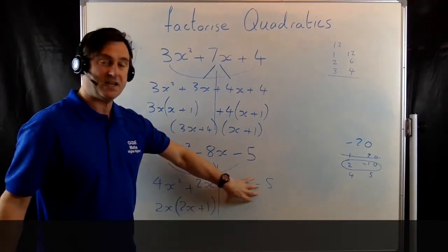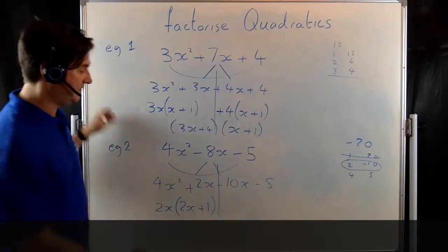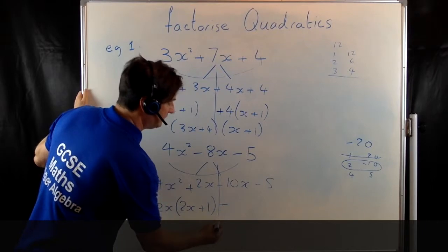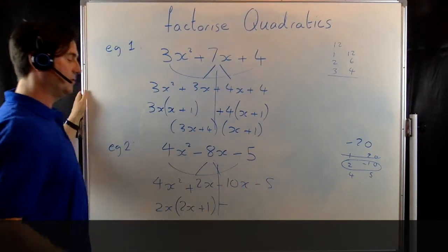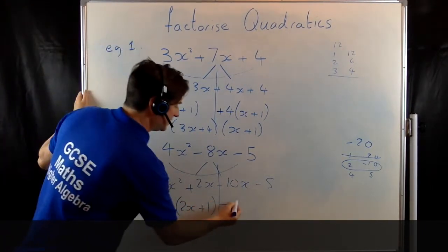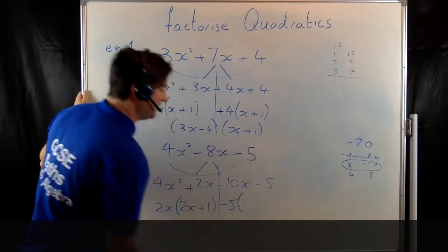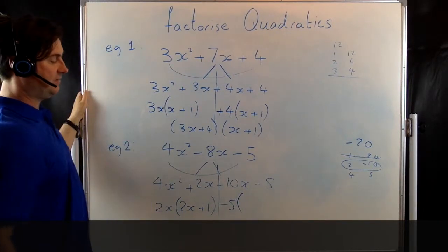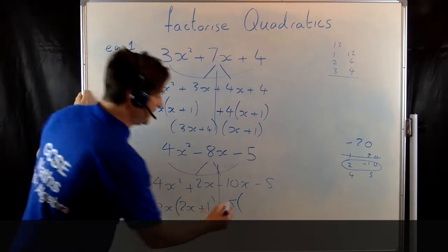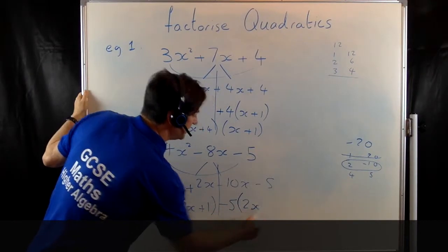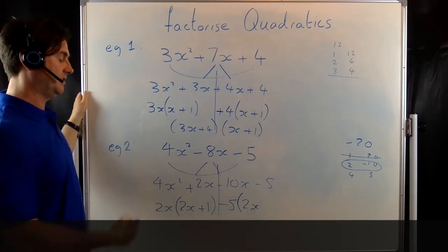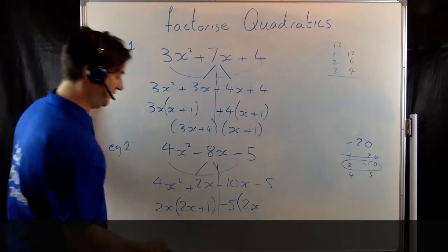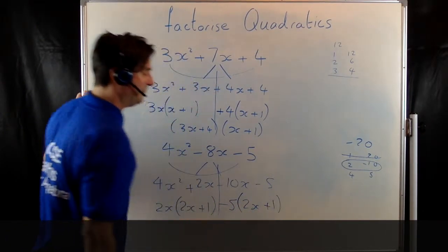Do the same with the second pair. There's a negative outside here so put a negative there. What occurs in both? What's a factor of both? It's 5. So I'll write negative 5. Open the brackets. Negative 5 times what gives us negative 10x? Well that's going to be 2x. And negative 5 times what gives me negative 5? That's going to be positive 1.